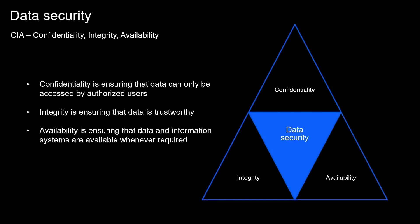Data security is about protecting data from unauthorized access, data corruption, or theft throughout its entire life cycle. This is achieved by following the three pillars: confidentiality, integrity, and availability — also known as the CIA triad. The CIA triad is a common term used in the industry when talking about cybersecurity and data protection.